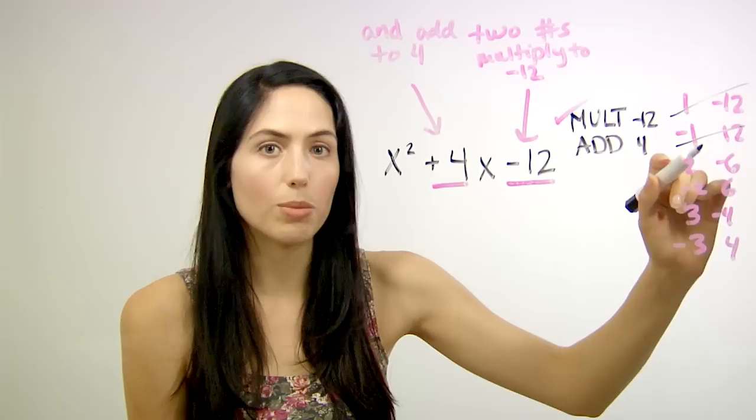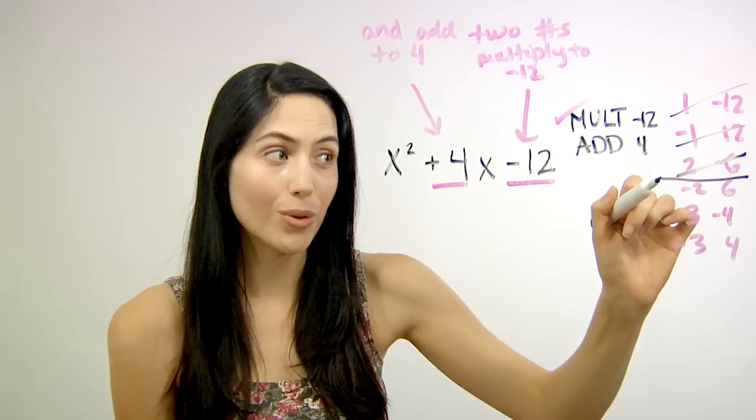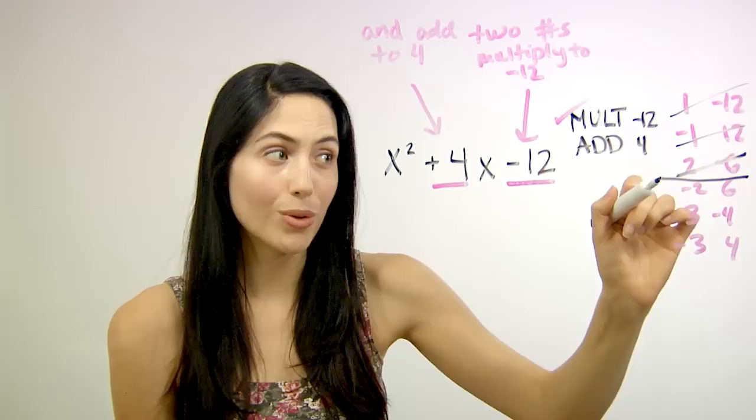2 plus negative 6 would give you negative 4. Close, but not positive 4. Negative 2 plus 6 will give you positive 4. So those are your answers, your numbers for factoring. And you can ignore the others. You don't need to check them at that point.